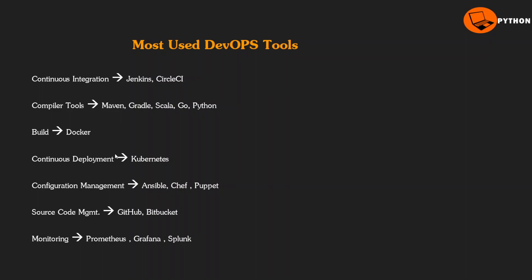Once compiler tools are done, we create a Maven package - a JAR or WAR file. Next for build, if our requirement needs a Docker file, we will create a Docker file and containerize our application into Docker. For continuous deployment, Docker applications run in Kubernetes - an orchestration platform for running all our containerized workloads. Then we have pipeline configuration management using Ansible and Chef, and source code management using GitHub and Bitbucket.